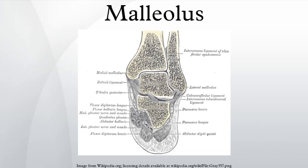Medial malleolus: the medial surface of the lower extremity of the tibia is prolonged downward to form a strong pyramidal process, flattened from without inward — the medial malleolus. The medial surface of this process is convex and subcutaneous. The lateral or articular surface is smooth and slightly concave, and articulates with the talus.